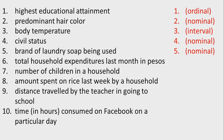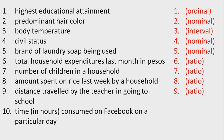Number four: civil status — nominal. Number five: brand of laundry soap — nominal. Number six: total household expenditures last month in pesos — ratio. Number seven: number of children in a household — ratio. Number eight: amount spent on rice last week by a household — ratio. Number nine: distance traveled — ratio. Number ten: time consumed on Facebook — ratio.